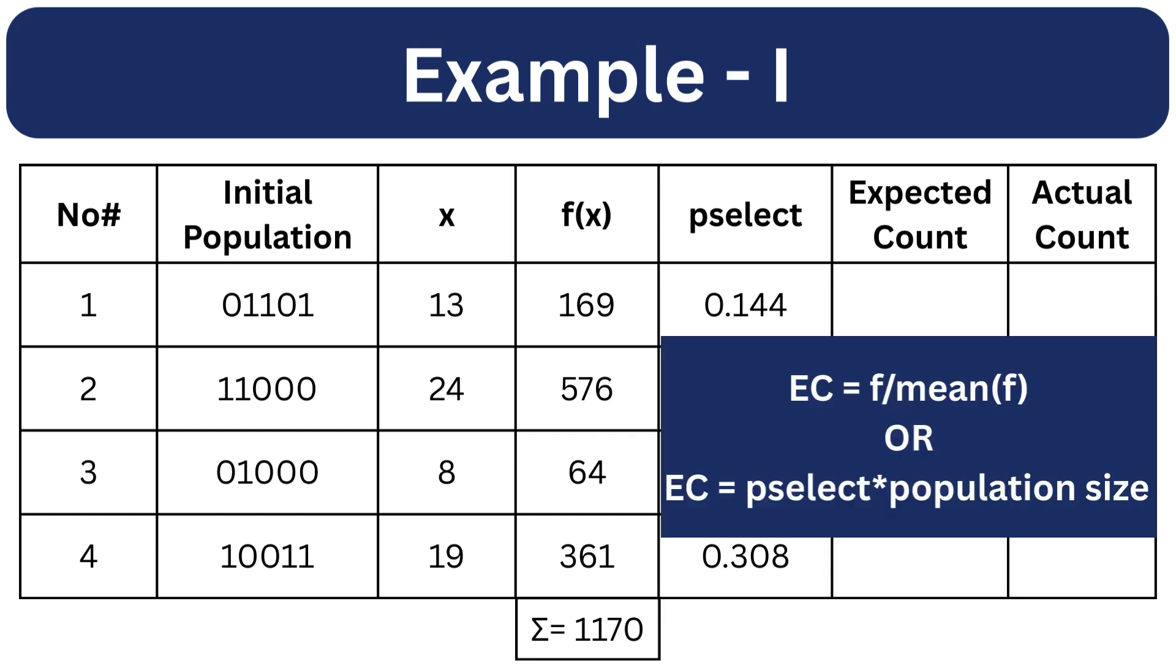Now let's calculate the expected count which estimates how many times each individual should appear in the next generation. There are two equivalent methods. Method 1 calculates the expected count by dividing the fitness of each individual. Method 2 calculates the expected count by multiplying the probability of selection for each individual to the population size which is 4 in this case.